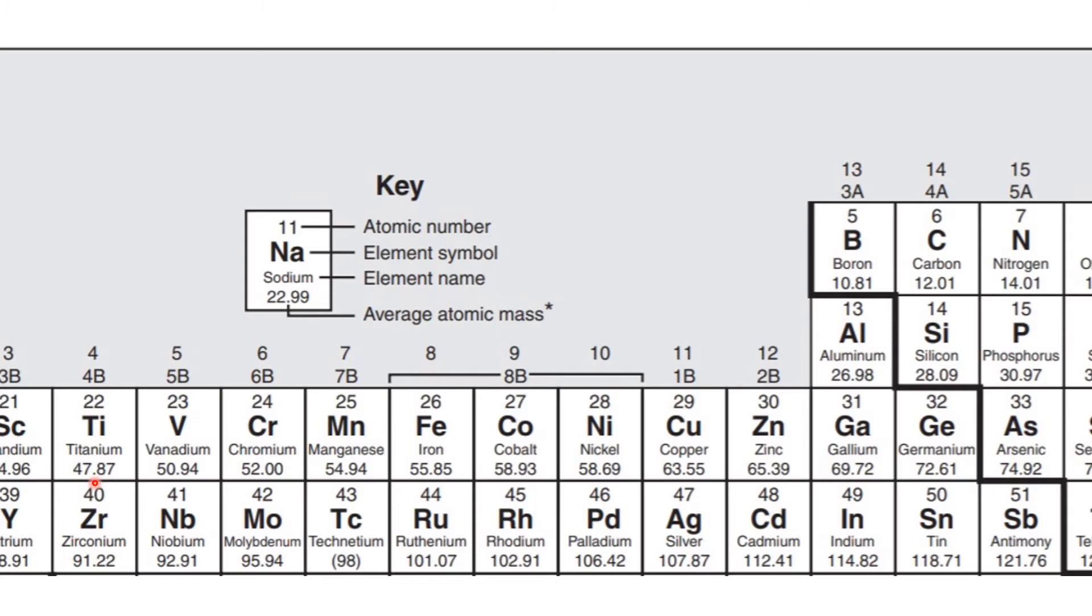But the mass of one mole of titanium atoms, that would be 6.02 times 10 to the 23rd of those atoms, is 47.87, but now it's in grams. So that's one of the key things to remember when you're doing this stuff. When we're talking a mole, it's in grams.